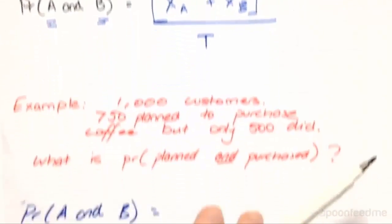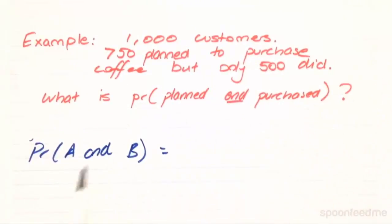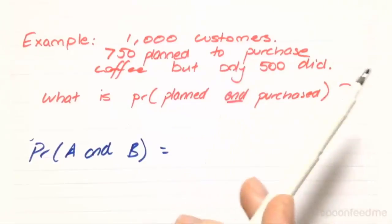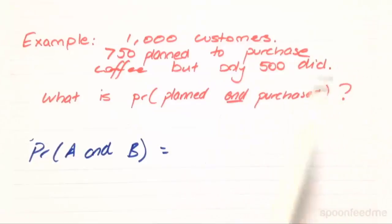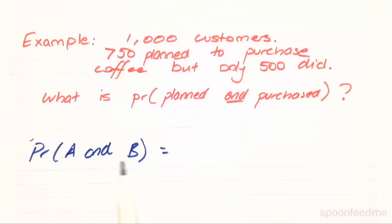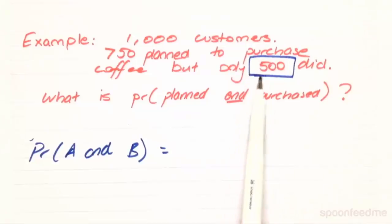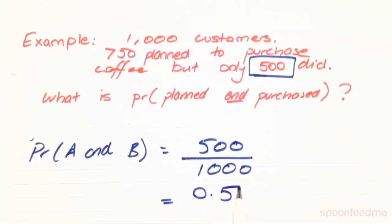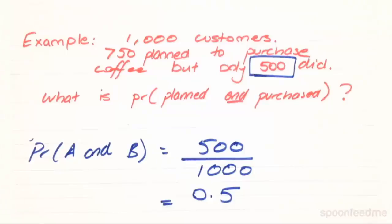Let's look at an example. Going back to our coffee shop with those 1,000 customers: 750 of them planned to purchase coffee, but only 500 of them actually did. What is the probability that someone both planned and purchased a coffee? The probability is when A and B are both satisfied — i.e., when they planned and purchased — which is 500 people. So we put 500 over the total of 1,000, which gives us a probability of 0.5. That is the probability that somebody planned to purchase a coffee and then purchased one.